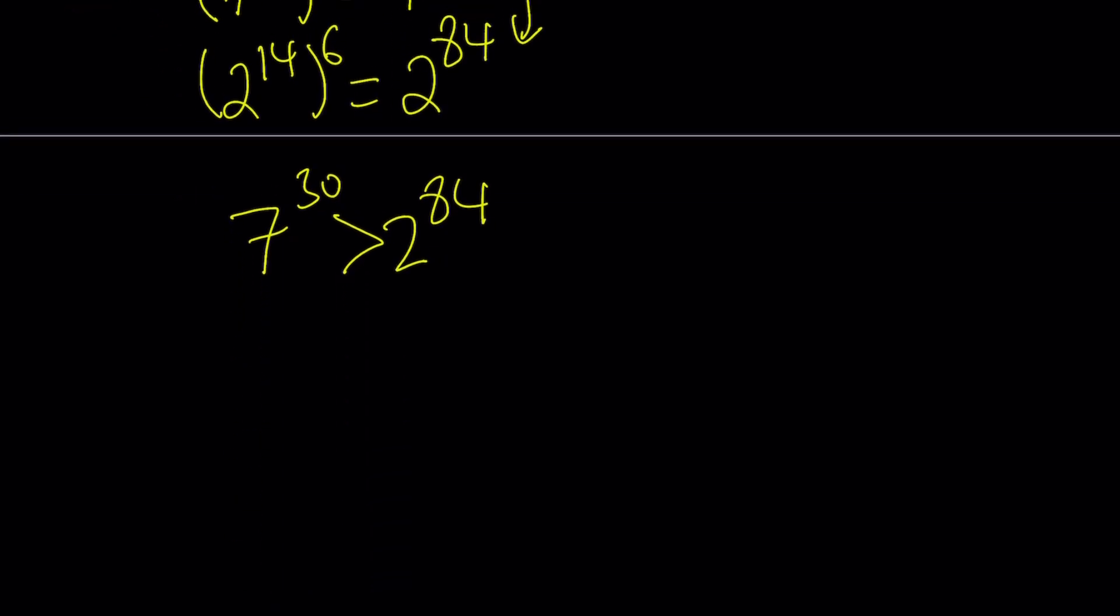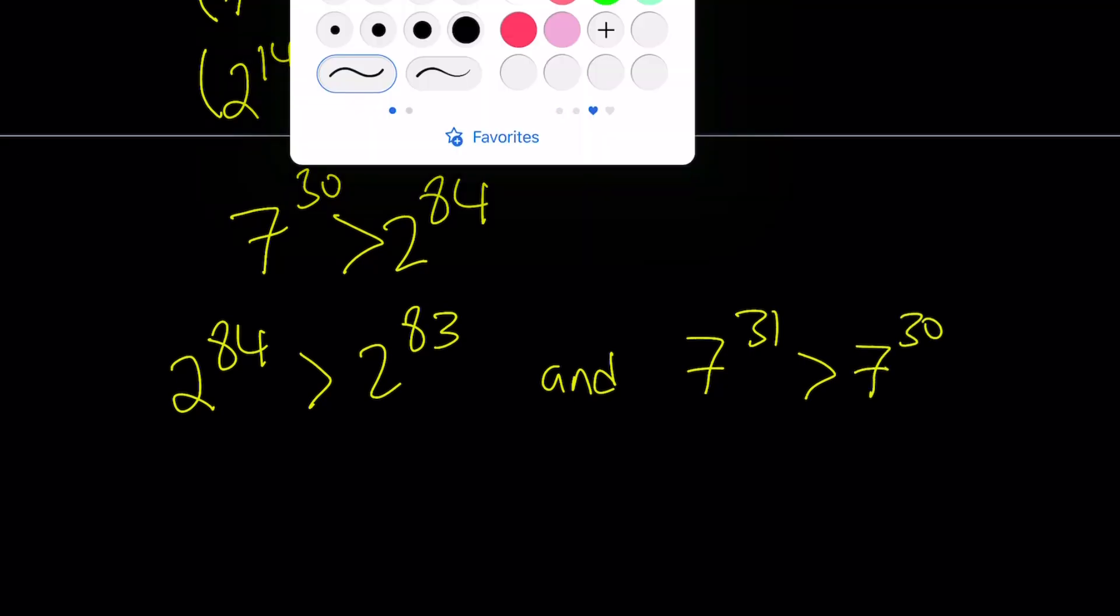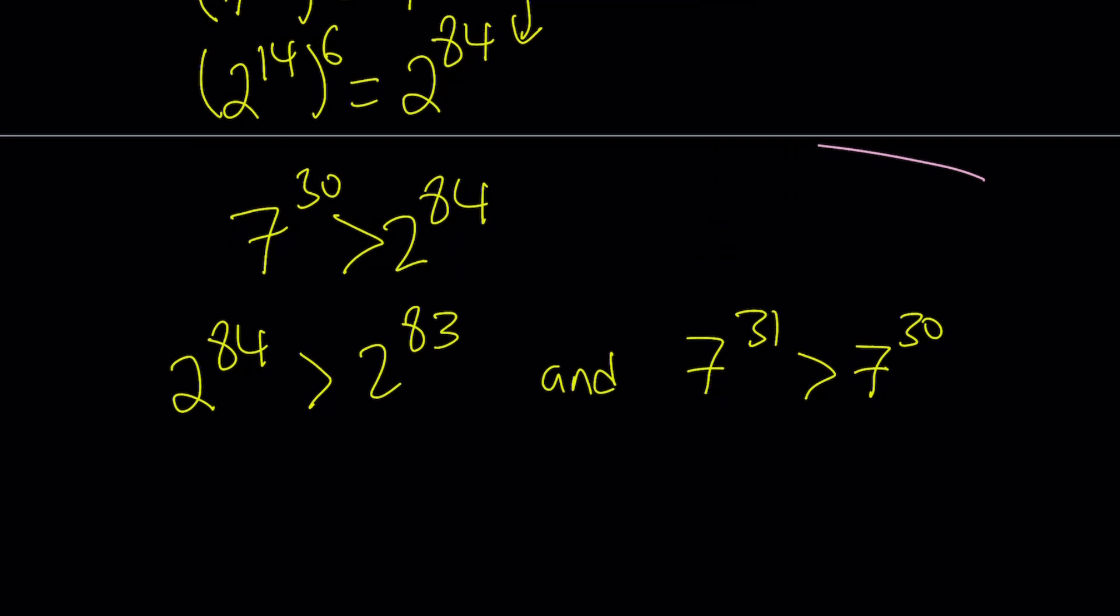Now, notice that we are trying to compare 2 to the power 83, and we do know that 2 to the power 84 is greater than 2 to the power 83. We also want to compare this number to 7 to the power 31, and we also know that 7 to the power 31 is greater than 7 to the power 30. So I have three different inequalities here. And how do I put all of this together? That's what we're going to do next.